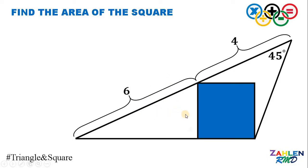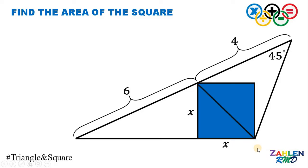First, let x be the side of the square. So if this side is x, this side is also x. Next, what we're going to do is draw the diagonal of this square. Notice that this angle right here must be equivalent to 45 degrees because this is half of 90 degrees. Now let this angle be equal to theta.